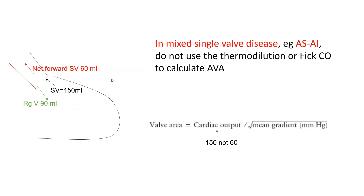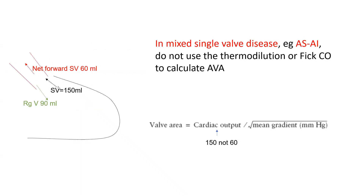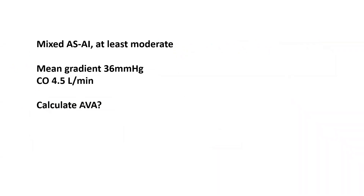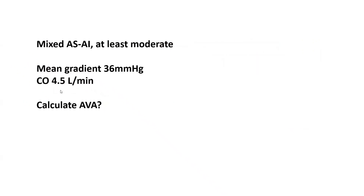The caveat: cardiac output measured by thermodilution or Fick is the net cardiac output. With mixed AS/AI, the flow across the valve per minute is higher than net output. For example, the heart pumps a stroke volume of 150 mL but only half reaches the peripheral circulation as measured by Fick or thermodilution. Therefore, with severe AI, flow across the valve is usually at least double the cardiac output, and at least 1.5 times cardiac output with moderate AI.